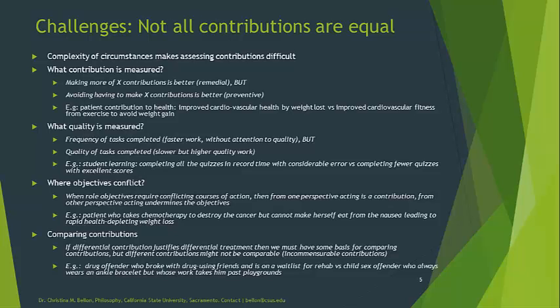We should also be attentive to where objectives might conflict, or where courses of action might conflict. When role objectives require conflicting courses of action, then from one perspective, undertaking that action can be seen as a contribution to the end or goal being pursued, or to the objective of the role. But from the other perspective, that action can be seen as undermining the goal to be pursued or the objective of the role.